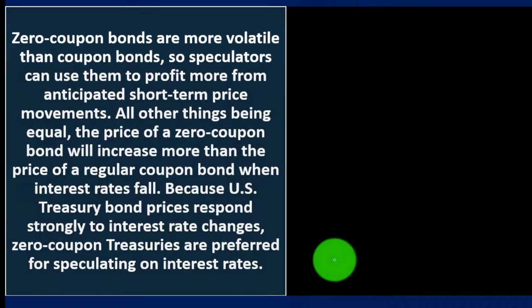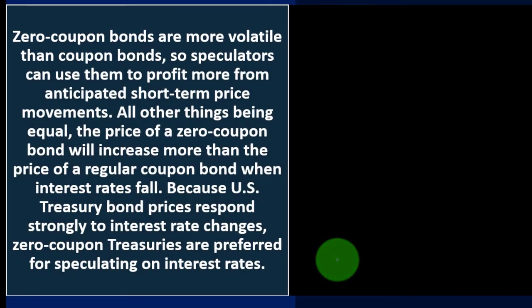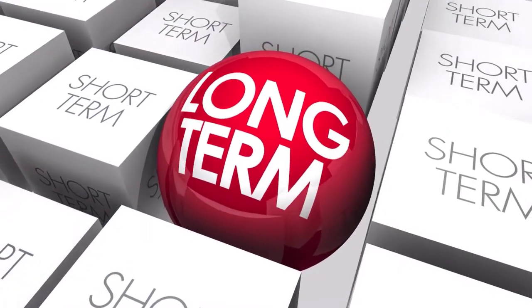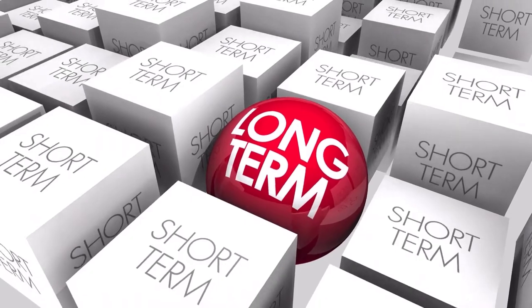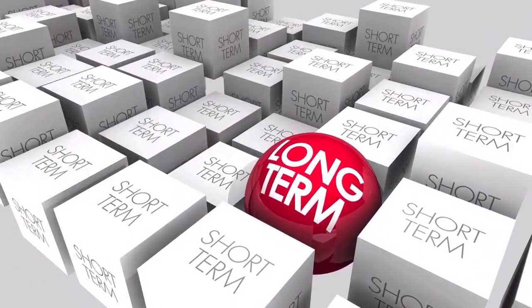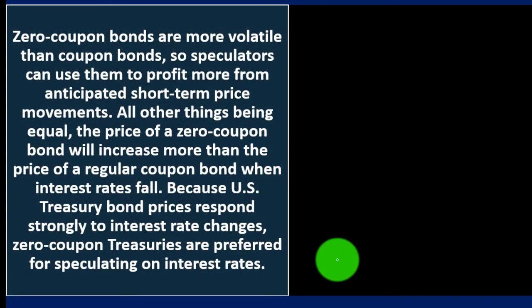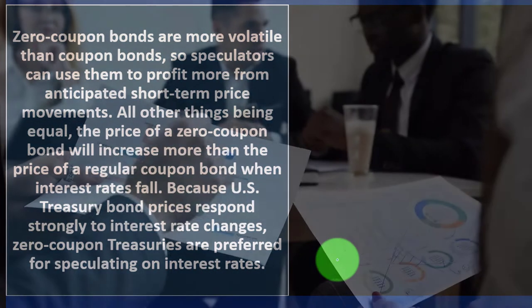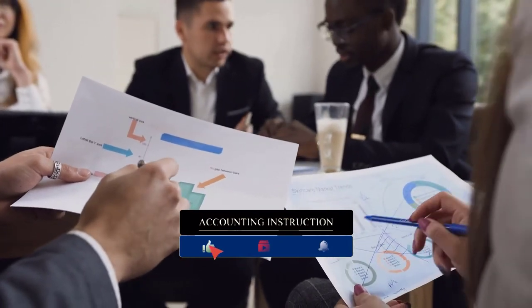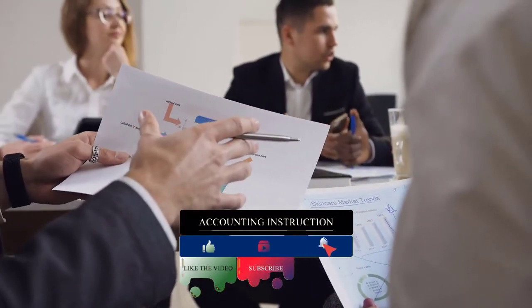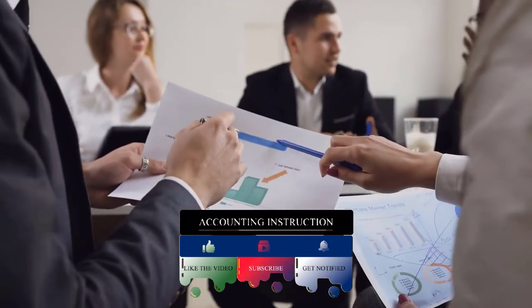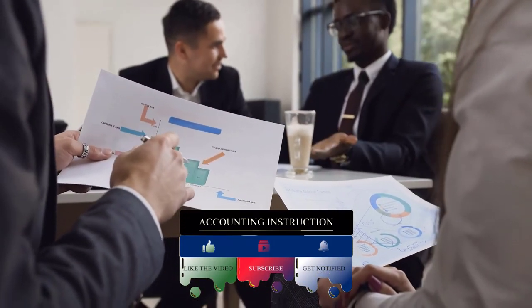The difference for speculators: zero coupon bonds are more volatile than coupon bonds, so speculators can use them to profit more from anticipated short-term price movements. If you're a long-term investor, you're probably trying to get exposure to bonds to balance out your portfolio. When we're talking about speculators, we're talking about people focused on short-term trading — predicting the market, trying to beat the market. So remember that you want to know where you stand in terms of what kind of investor you're aiming to be.